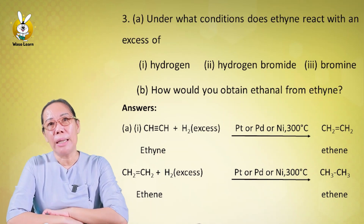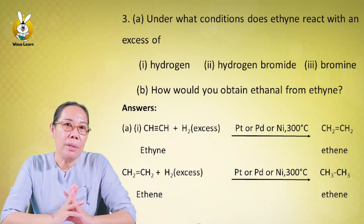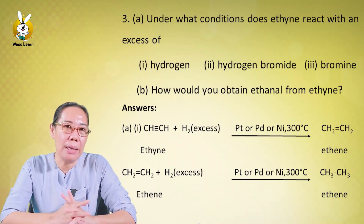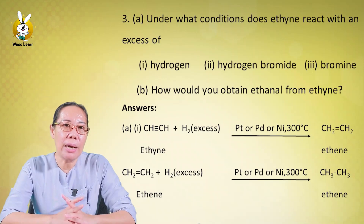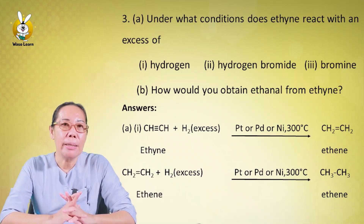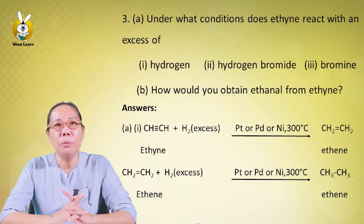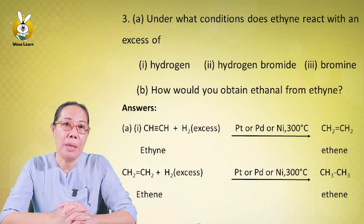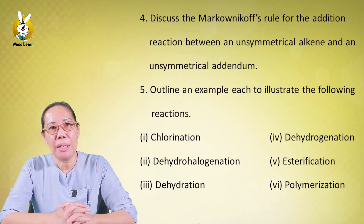How will you obtain ethane from ethene? This involves the relationship between ethane and ethene. The rule for the addition reaction between an asymmetrical alkene and an asymmetrical reagent — this is the definition of Markovnikov's rule.